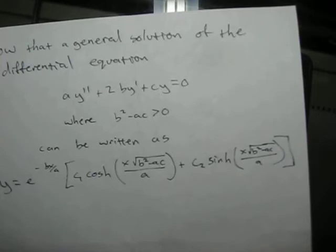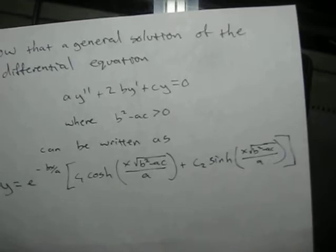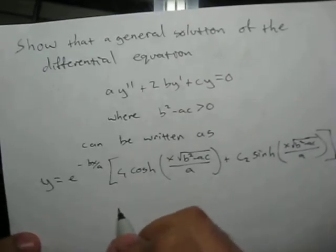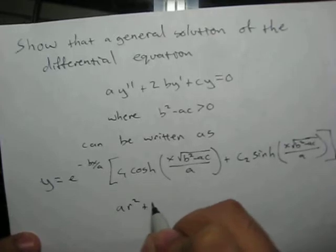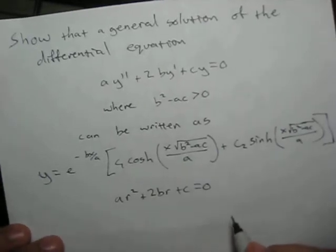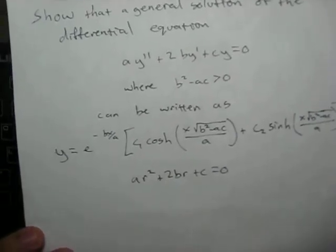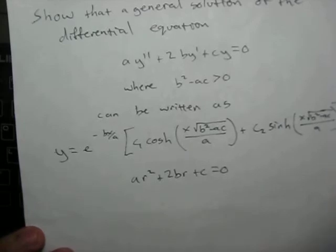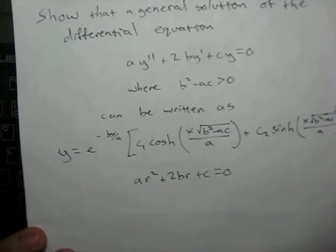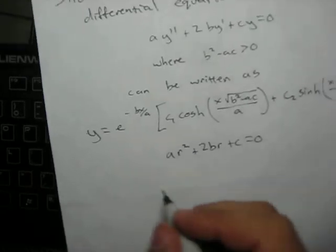When you first look at this it's kind of terrifying, but we can get through it. The first thing we're going to do is find the characteristic equation of the original differential equation. Looking at it, the characteristic equation should be a*r² + 2b*r + c = 0. We'll go ahead and solve this — it's not immediately factorable, so we'll run it through the quadratic formula.